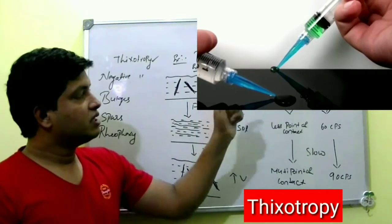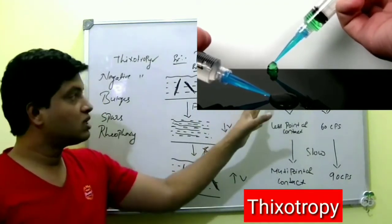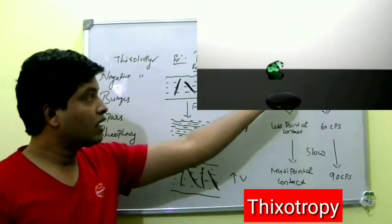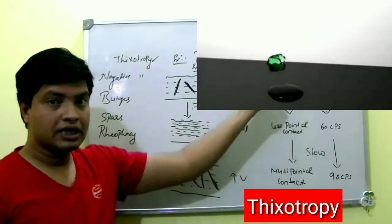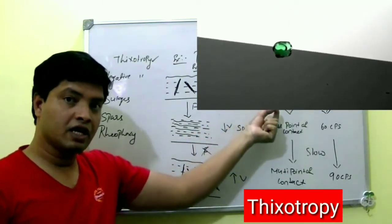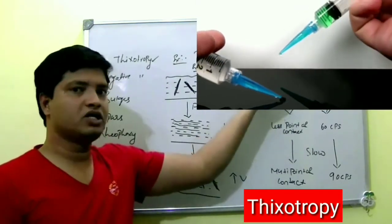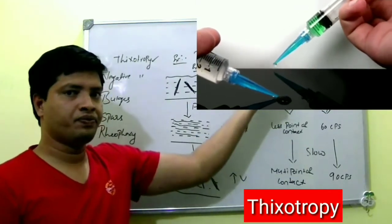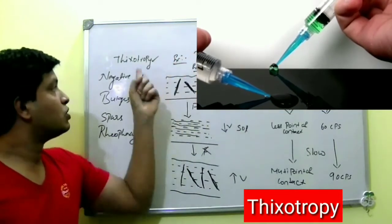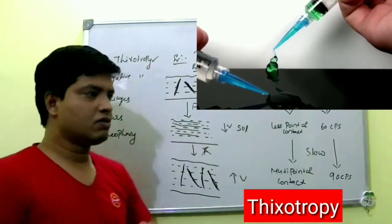In the injection, the system is actually a gel. While coming out through the needle, it becomes a thin liquid. Then when it goes back to rest, it forms a gel again. This property is called thixotropy.